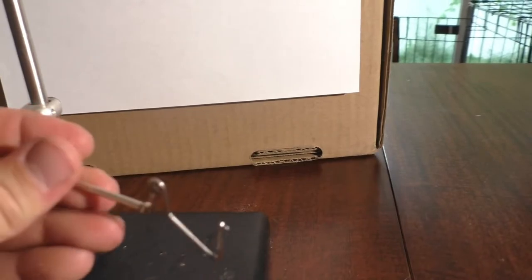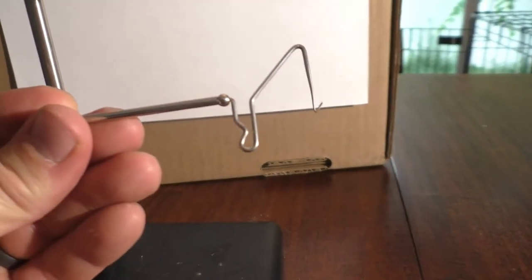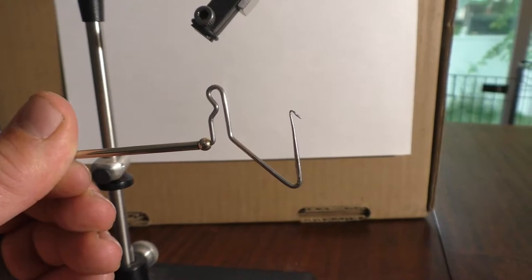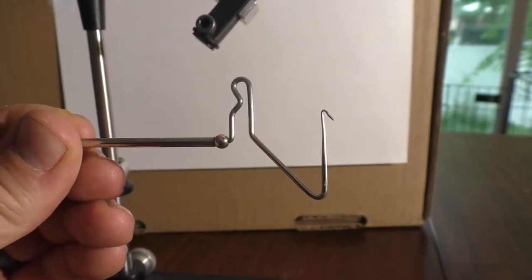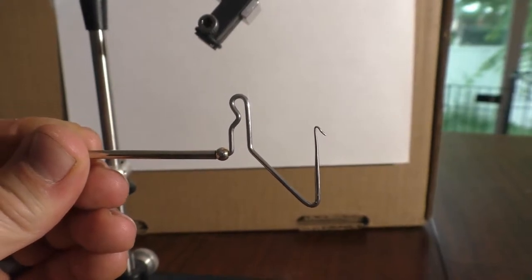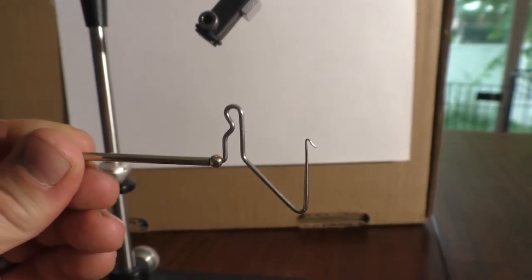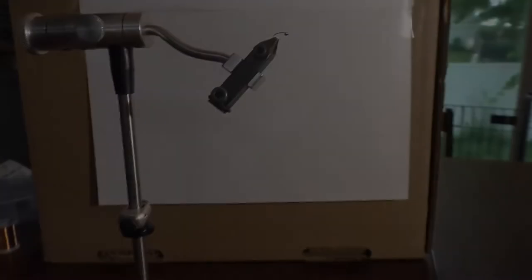And finally, but not least, a whip finisher. I prefer to use this because I have dry hands a lot of times and my fat sausage fingers don't do so good with the whip finish by hand. So this is a really handy inexpensive tool. Alright, let's get tying.